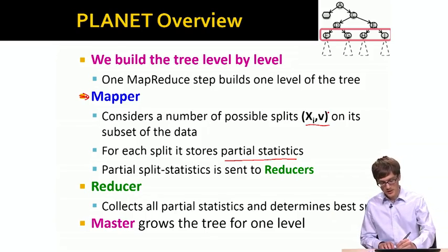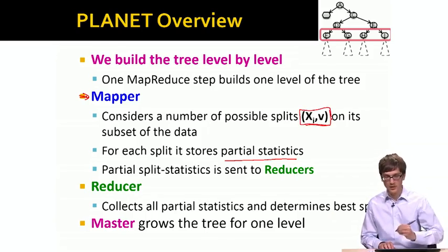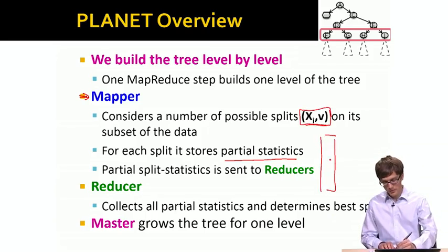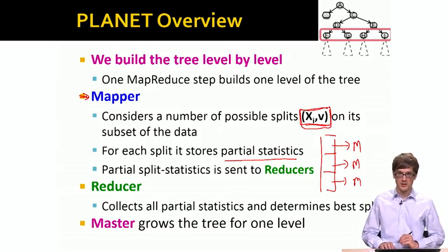Basically, the idea is that given the particular feature and a particular split value, if I have our big input file that is split into chunks, each chunk is sent to a separate mapper. This mapper will compute some statistics of how this given attribute and this given value, what is the quality of the split.